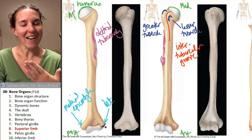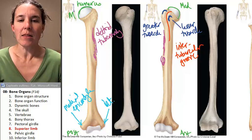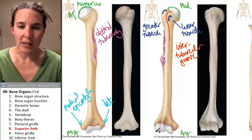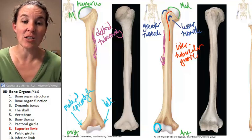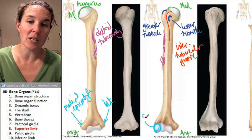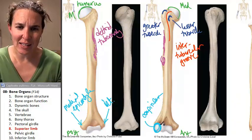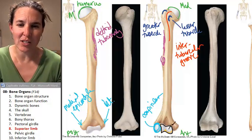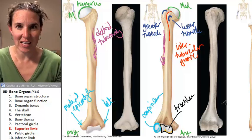Being able to tell anterior and posterior aspects of the humerus will help you identify whether your humerus comes from the right or left side of the body. On the distal end of the humerus there's a rounded circle — this is an articulation of the radius called the capitulum. Next to it is a pulley-looking structure called the trochlea, where the ulna articulates with the humerus.